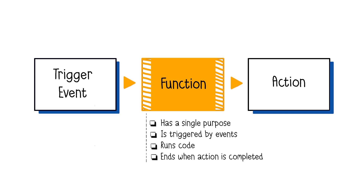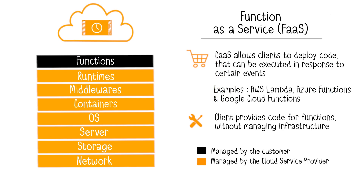Now let's move on to Function as a Service. In this model, the developer is responsible for coding functions. A function can be triggered by events, for example when it is called by an HTTP request. This request triggers the code execution and can query a database. Once the action is completed, the process ends. Each function has a single purpose. The developer only needs to provide their code for one or more functions, and everything else is taken care of by the cloud service provider. Function as a Service can be used for scheduled tasks — for example, to run a specific piece of code at a scheduled date or frequency — or for building automated workflows with a set of functions that can call each other and trigger actions with other cloud services.